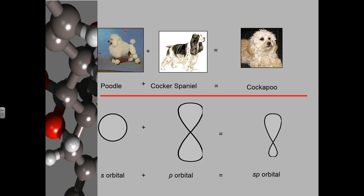The S orbital by itself is spherical, and the P orbital is like a peanut-shaped or figure-eight orbital. When the S and P orbitals hybridize, they form an SP hybrid orbital that takes on characteristics of both — one lobe is bigger than the other, giving a figure-eight shape that is not evenly symmetrical.